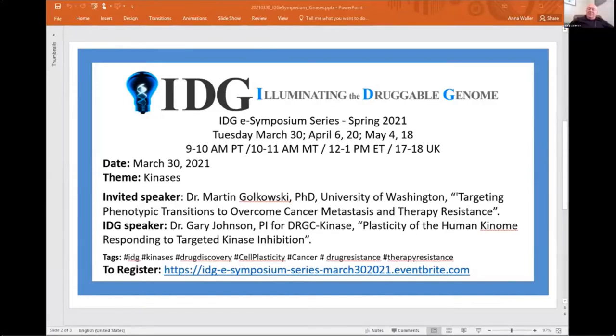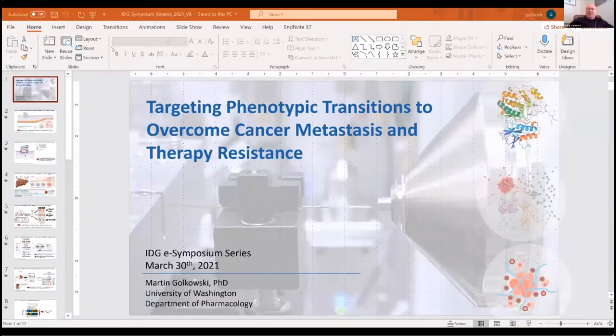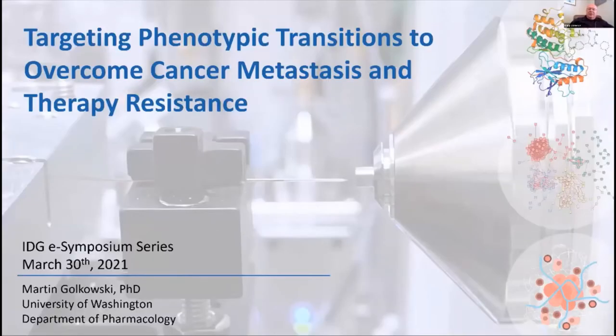I'm Gary Johnson. I'll give a brief introduction for Martin to save time for the science. Martin is on the faculty in the Department of Pharmacology at the University of Washington in Seattle. He published a paper a couple of months ago in Cell Systems that I think everyone can learn from. He's going to spin off from that paper and his current work on targeting phenotypic transitions, and I will try to add to that in my presentation.